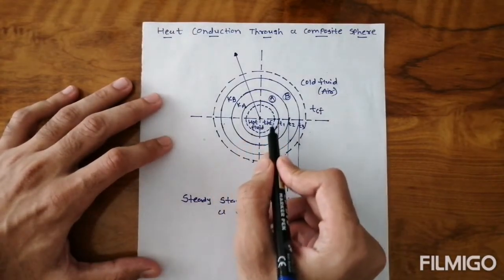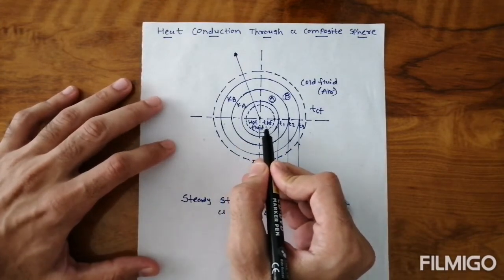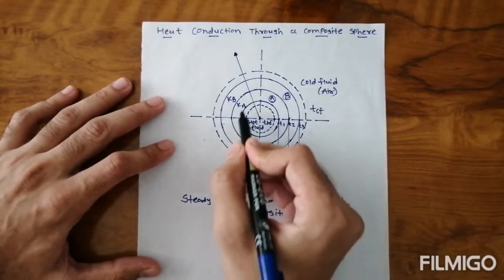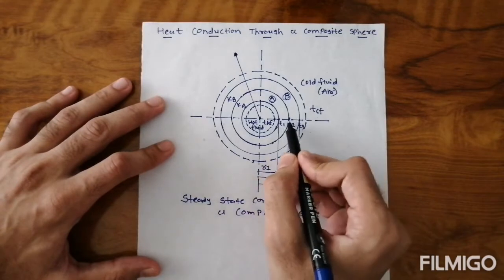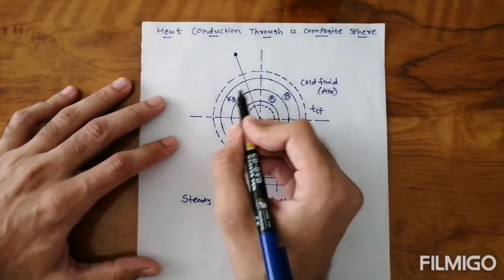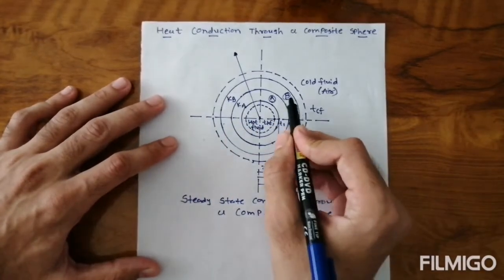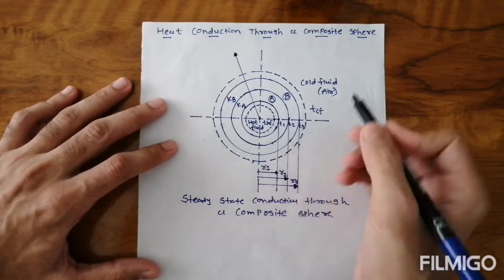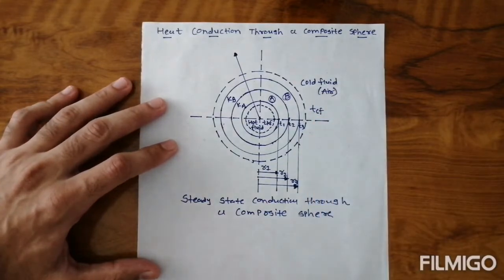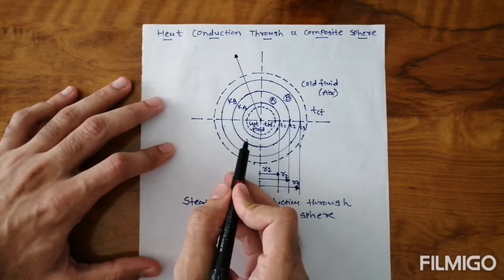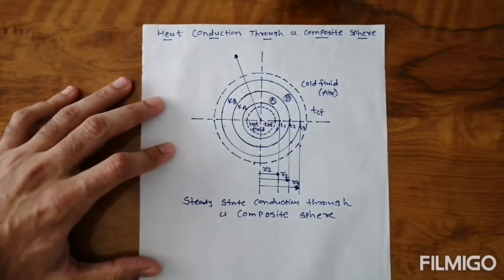Inside hot fluid has a temperature THF — temperature of the hot fluid or inside temperature of the fluid. T1 is the surface temperature of the sphere. T2 is the surface temperature of layer A, or the interface temperature between layer A and layer B. T3 is the surface temperature of layer B, the interface between layer B and the surrounding. TCF means temperature of the cold fluid — the outside temperature of the fluid. KA is the thermal conductivity of layer A and KB is the thermal conductivity of layer B.